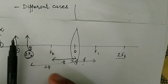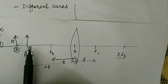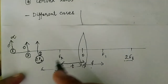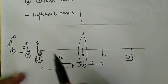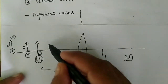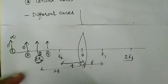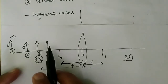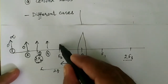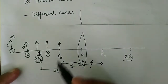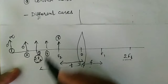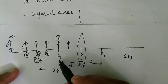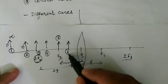Bringing the object more nearer, the third case is when the object is at 2F2. The fourth case is when the object is between 2F2 and F2. The fifth case is when the object is at F2. And the last, sixth case is when the object is very nearby the lens — that is between F2 and the optical center.